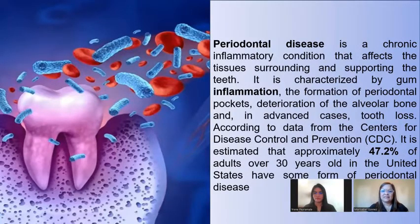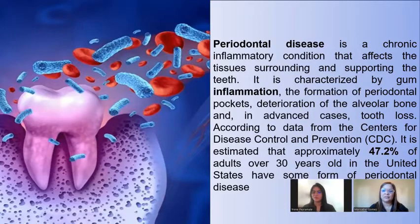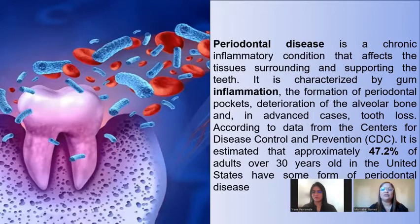Periodontal disease is a chronic inflammatory condition that affects the tissues surrounding and supporting the teeth. It is characterized by gum inflammation, the formation of periodontal pockets, deterioration of the alveolar bone, and, in advanced cases, tooth loss. According to the CDC, 47.2% of adults over 30 years old in the United States have some form of periodontal disease.